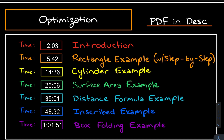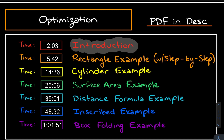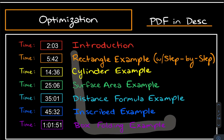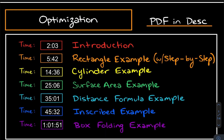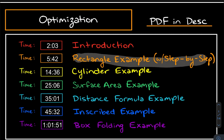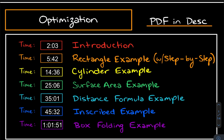I want to start with an introduction comparing optimization to related rates, because they're pretty similar — both are word problems that involve calculus to solve. This video is structured closely to my related rates video. In the first problem I'll give you a step-by-step process, like training wheels. It will be longer in the first example, and I'll shorten the process for subsequent problems to give you the full scope of what an optimization problem entails.